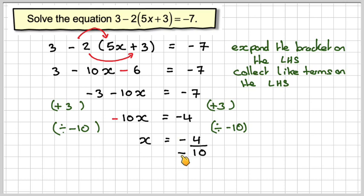Minus and minus will make a positive, and then this 4 over 10 will cancel down to be 2 out of 5. So the final answer is x equals 2 over 5.